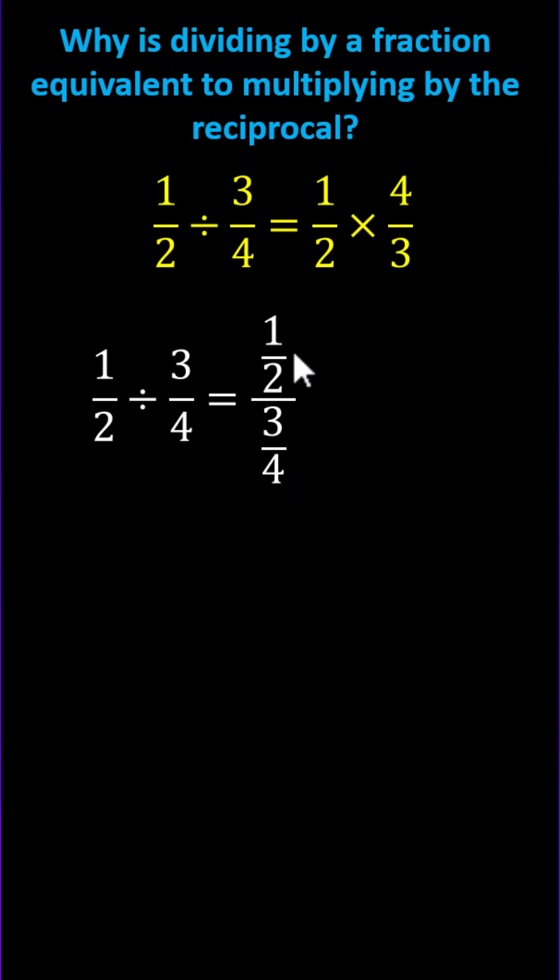Let's multiply the numerator and denominator of the complex fraction by the reciprocal of 3 fourths, which is 4 thirds. Focusing on the denominator, notice we have 12 twelfths, or 1, giving us the product of 1 half and 4 thirds divided by 1.